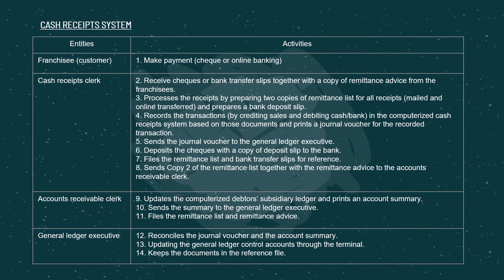Next, this is the table of entities and activities for the cash receipt system. It shows that the franchisee makes payment, the process of the check or bank transfers led by the cash receipt clerk, updates in the computerized debtor subsidiary ledger, and reconciliation of the general voucher and account summary.